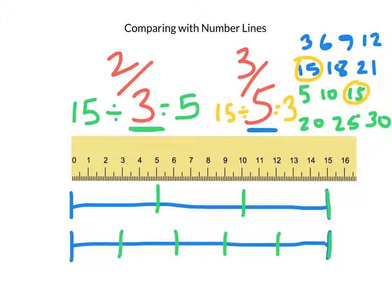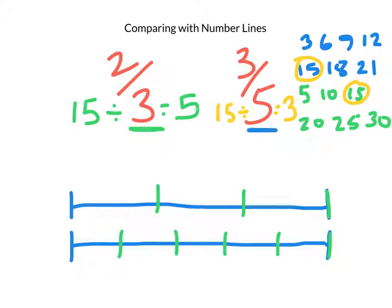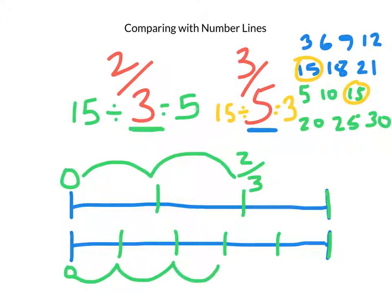Excellent. So to mark down 2/3, well, just give me a moment to get rid of my ruler first. So starting at the zero, or the beginning, I would count over 1, 2 thirds. So this line represents 2/3. And on the bottom one, this is my zero, and I want to mark down 3/5: 1, 2, 3. So this line represents 3/5.